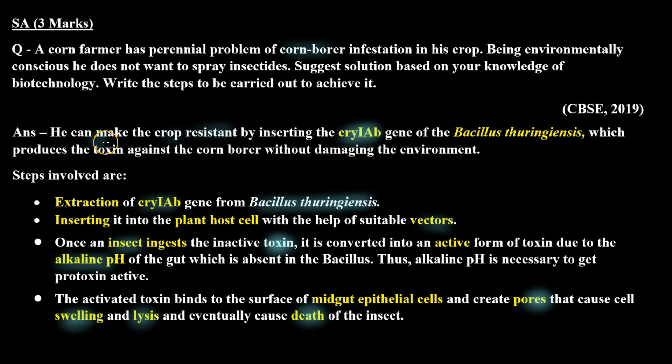He can make the crop resistant by inserting the cry1AB gene of Bacillus thuringiensis, which produces the toxin against the corn borer. The steps involved are: extraction of the cry1AB gene from Bacillus thuringiensis, then inserting it into the plant host cell with the help of suitable vectors. Once an insect ingests the inactive toxin, it is converted into an active form due to the alkaline pH of the gut, which is absent in the bacillus.